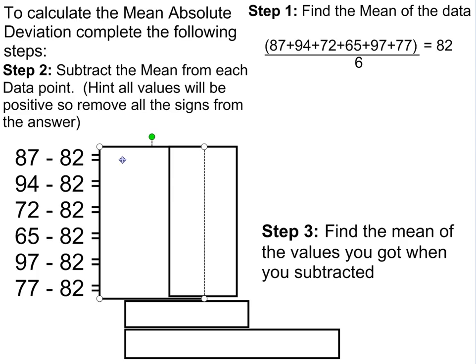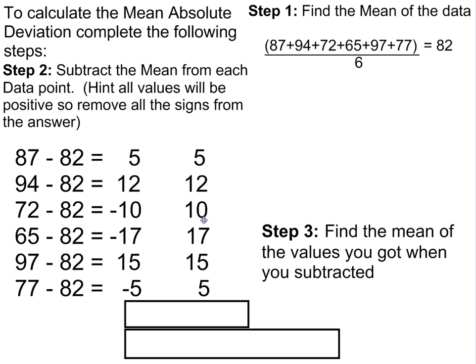So we're going to subtract 82 from each one. And what you end up getting is 5, 12, negative 10, negative 17, 15, and negative 5. So if we take away the signs, we have 5, 12, 10, 17, 15, and 5.